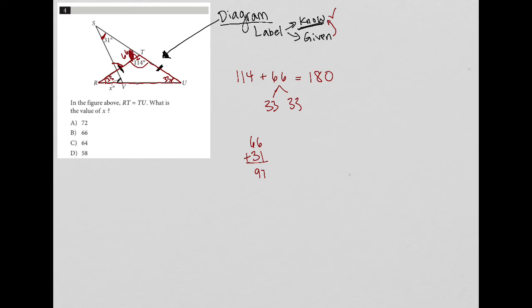That's this angle here that I'm marking in red, plus this angle here that I'm marking in red. So, then 180 minus 97 is 83, and therefore, this angle down here is 83 degrees. Again, because all three of these angles must add up to 180.